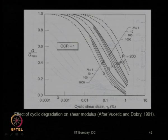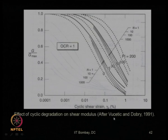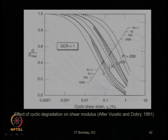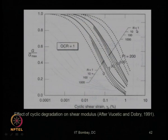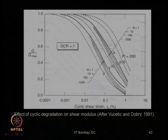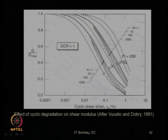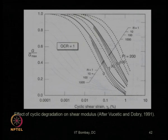The effect of cyclic degradation on shear modulus was proposed by Vucetic and Dobry (1991) from laboratory experiments. As the number of cycles N increases (N = 1, 10, 100, 1000), there is degradation of the G/G_max value for various values of plasticity index, shown for normally consolidated soil (OCR = 1).